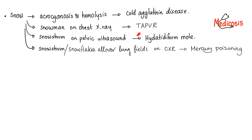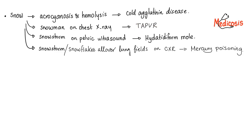Now let's talk about TAPVR, or total anomalous pulmonary venous return. The venous return from the lungs has an anomaly. Sometimes the anomaly is total — called total anomalous pulmonary venous return — or partial, meaning just partial. Of course, total is going to be worse.